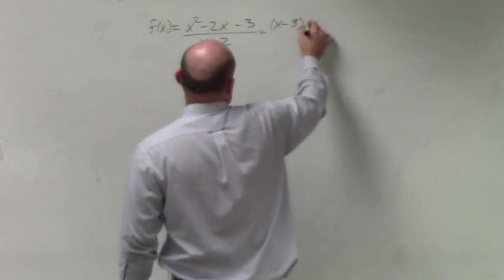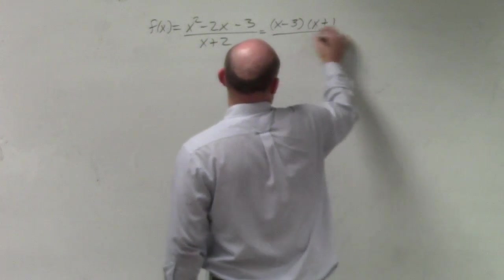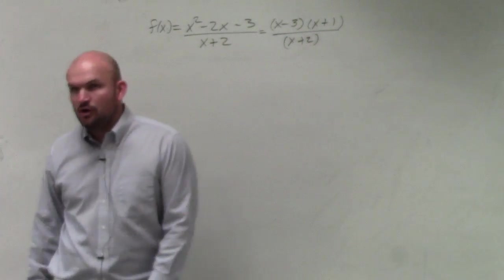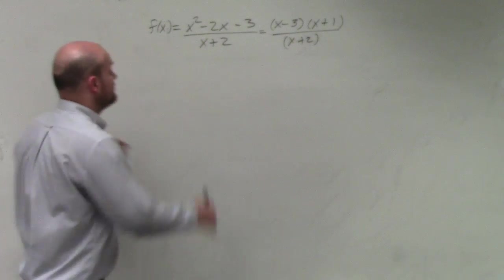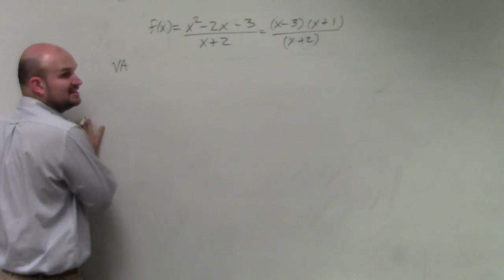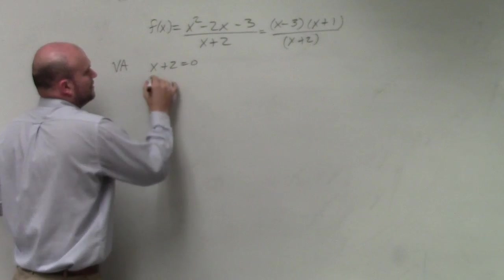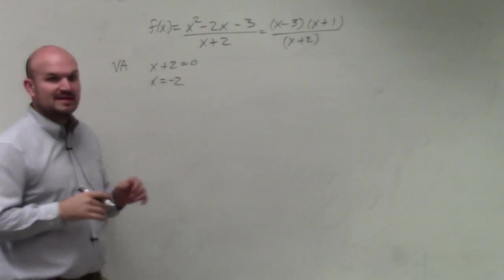x minus 3 times x plus 1 over x plus 2. Does anything factor out to give us a whole? No. So therefore, our vertical asymptote is as simple as setting the denominator equal to 0. Vertical asymptote is x equals negative 2.